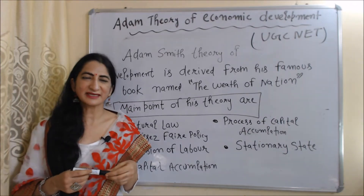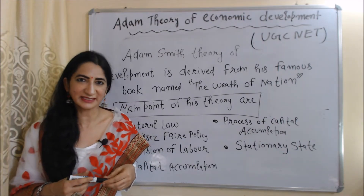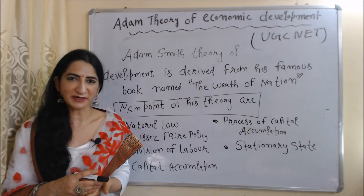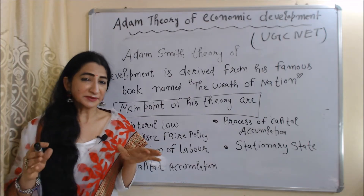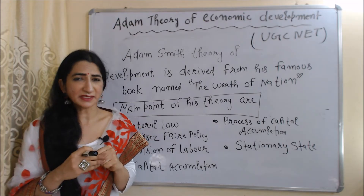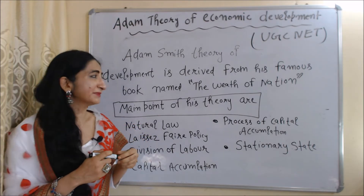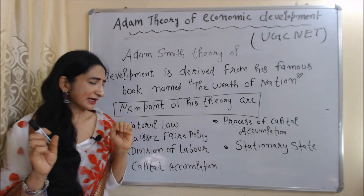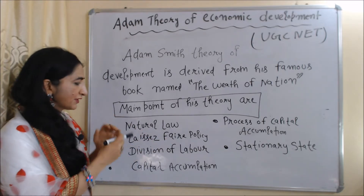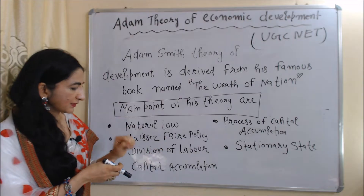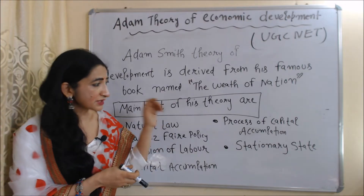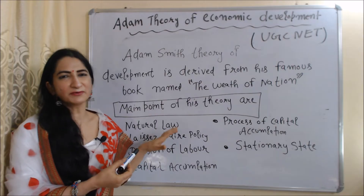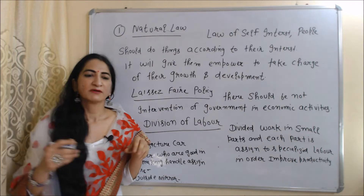Hello everyone, my name is Vinny Sati. I hope you all are staying healthy. Today we are going to talk about Adam Smith's theory of economic development for UGC NET. This theory is derived from his famous book 'The Wealth of Nations,' and the main points are: natural law, laissez-faire policy, division of labor, capital accumulation, process of capital accumulation, and stationary state.